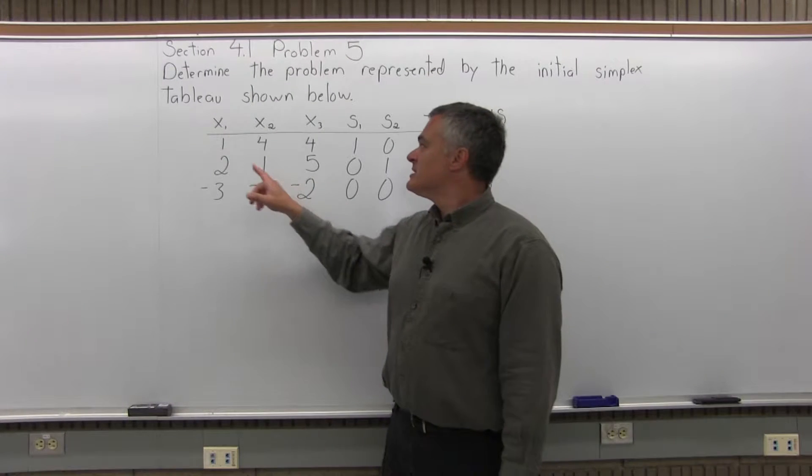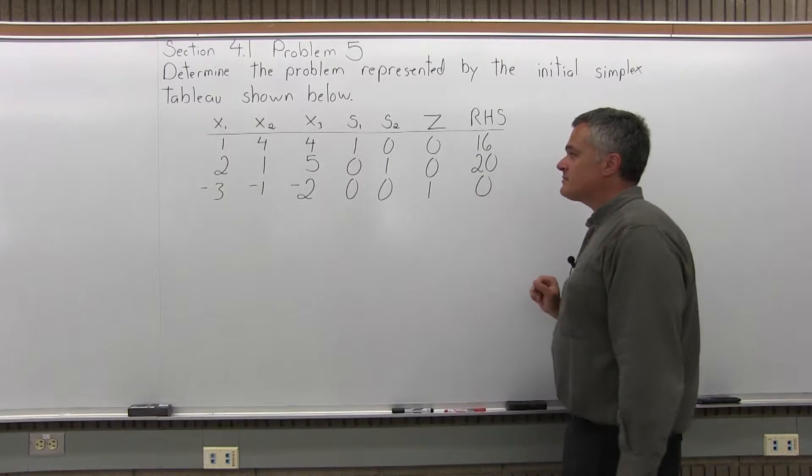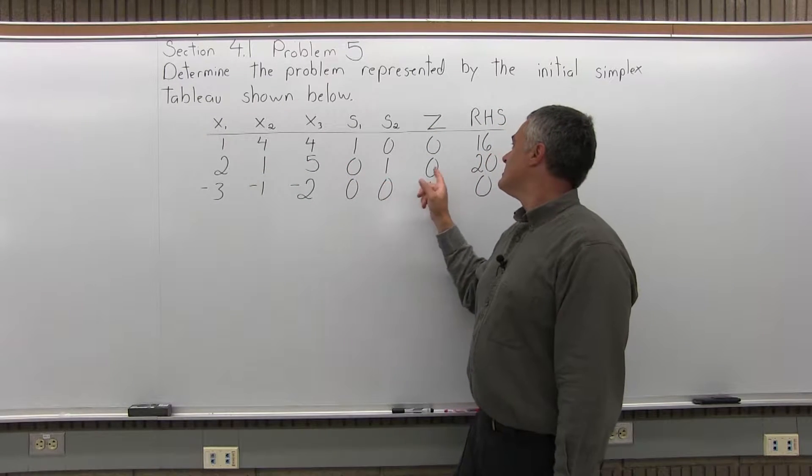The top row of the simplex tableau is 1, 4, 4, 1, 0, 0, 16. There is a second row: 2, 1, 5, 0, 1, 0, 20.